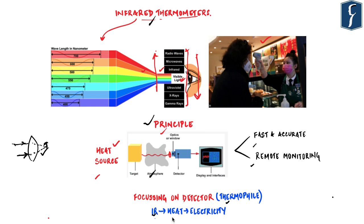The thermophile absorbs IR radiation and converts it into heat, which is then fed to a special detector that converts heat into electricity — the higher the heat, the higher the electric current. The internal mechanism is calibrated so that the human range of temperatures can be translated from that electricity into a final temperature reading, displayed within a fraction of a second. Infrared thermometers are used because they eliminate the need for physical contact and are fast, accurate, and allow remote monitoring.